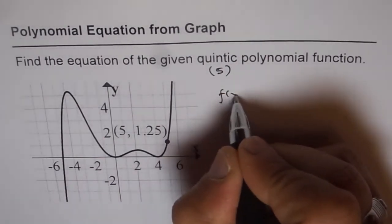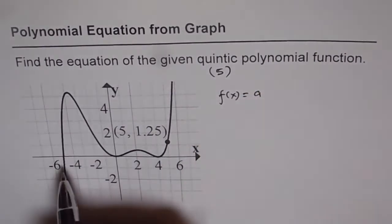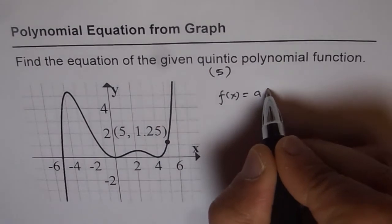So we can write down our function f(x) as equals to a times factors. So a is your leading coefficient and let's start counting the x-intercepts as factors.